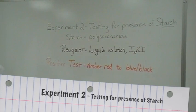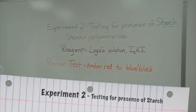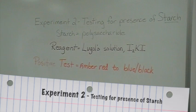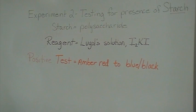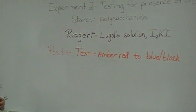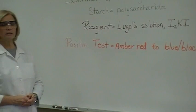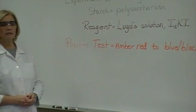Experiment two that you are going to carry out today is testing for the presence of starch. Starch remember is a polysaccharide. Many monomer units, many monosaccharides bound together. The reagent that you will use is Lugol solution or it could be referred to as iodide, potassium iodine. A positive test for this analysis will be an amber, yellow, red color to a blue black. It will look like the initial color looks like a sweet tea.